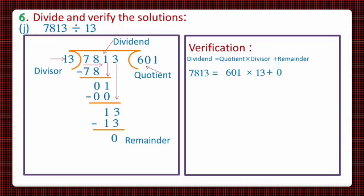So here first of all we'll solve the multiplication part. On multiplying 601 by 13 we will get 7813 as the answer, plus 0 we will write as it is.